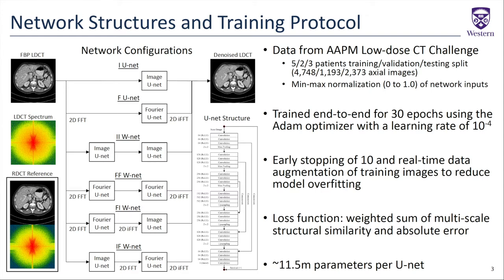We used a 2D fast Fourier transform to obtain the spatial frequency spectrum, then an absolute inverse Fourier transform to revert back to the image domain, which was always the final output of each network. Data were from the AAPM Low-Dose CT Grand Challenge, consisting of 10 patients with suspected metastatic liver lesions who obtained routine-dose contrast-enhanced body CT imaging, from which a quarter-dose acquisition was simulated. Patients were split five-to-two-to-three for training, validation, and testing, and min-max normalization scaled network inputs between zero and one.